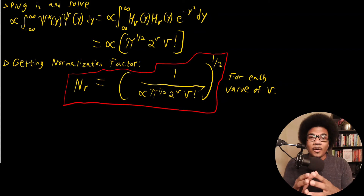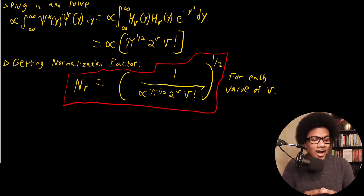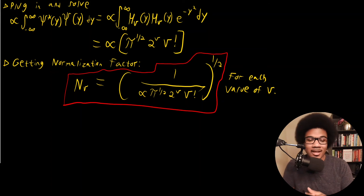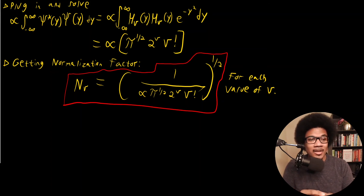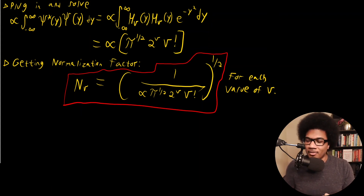Now that we've got our normalized wave function, we're ready to start calculating some properties of the harmonic oscillator. In the next video, what we're going to do is calculate the average displacement for the harmonic oscillator, just like with the particle in the box where you could get an average position — we're going to get an average displacement for the harmonic oscillator and talk about that property.